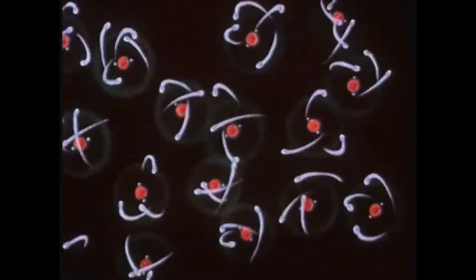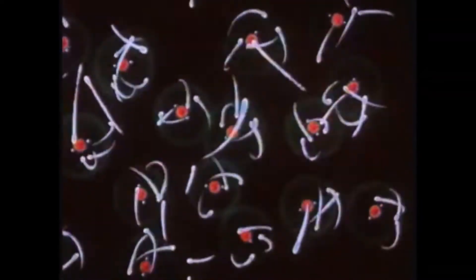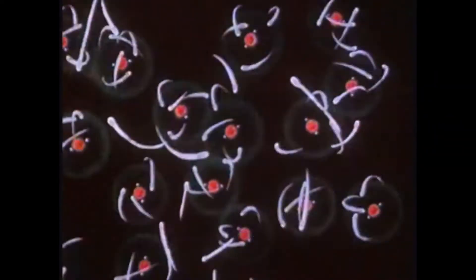And if we bring many such atoms close together, as in a piece of metal, then many electrons detach themselves from their original atoms and move freely throughout the metal.